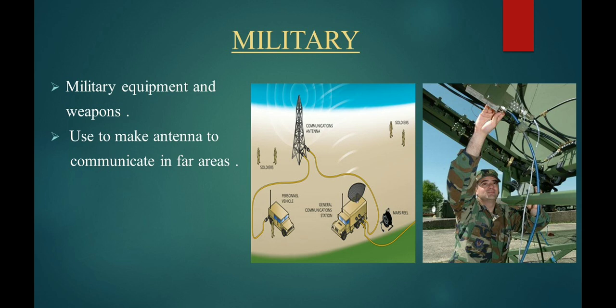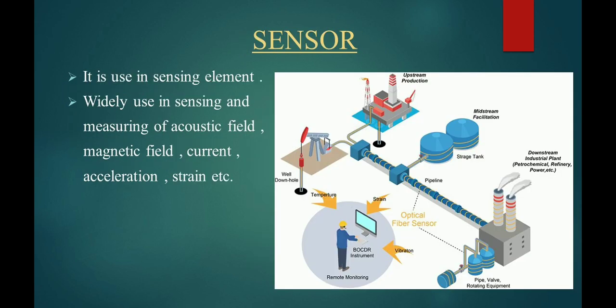Third one is sensors. A fiber optic sensor is a sensor that uses optical fiber either as the sensing element or as the means of relaying signals from a remote sensor to the electronics that process the signals. They are widely used in sensors for the sensing and measuring of acoustic field, magnetic field, current, acceleration, strain etc.